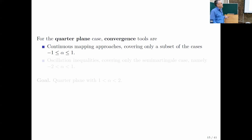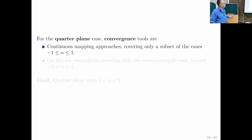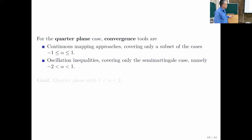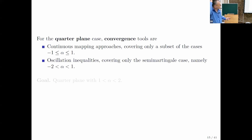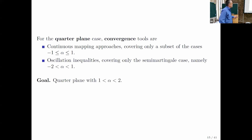Continuous mapping approaches only cover cases where alpha is between minus one and one, and only a strict subset because there are counter-examples. Oscillation inequalities cover the semi-martingale case, which applies when alpha is less than one. So we are left with the regime alpha between one and two where there are no earlier tools. This is our goal.